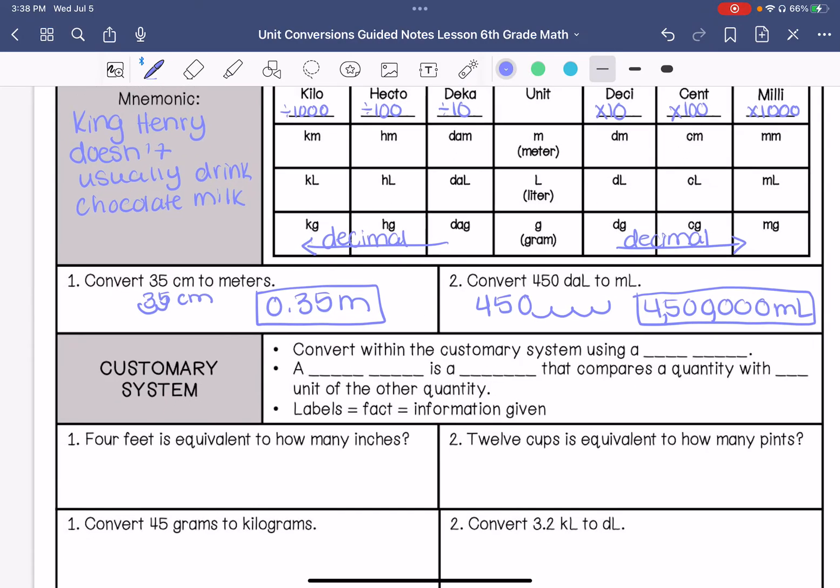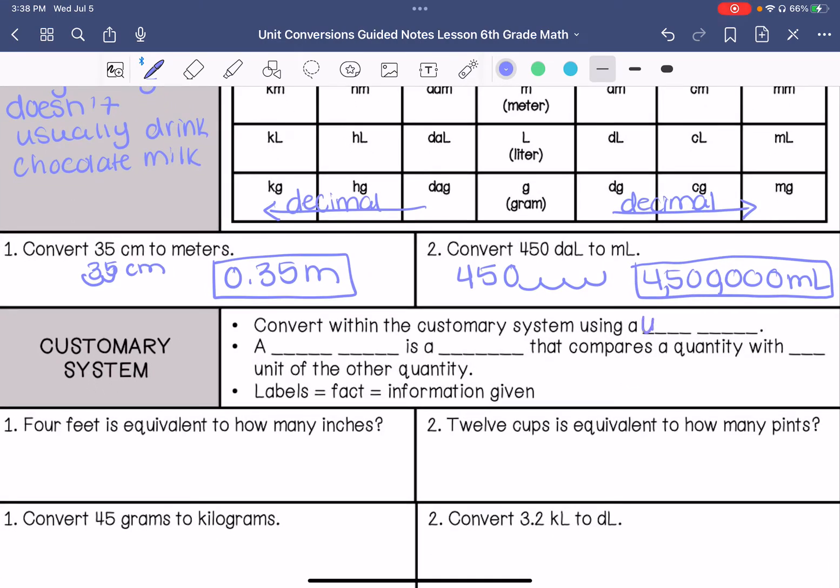In the customary system, you are going to convert using a unit rate. A unit rate is a ratio that compares a quantity with one unit to the other quantity. We're going to use the STAAR sixth grade reference charts. I'm from Texas, so that's our state exam, and we are going to use that reference chart to help us set up our conversion. You would look at what are the two different labels I'm converting between, what is the factual information given on my reference chart, and then what is the information given in the problem on my paper.